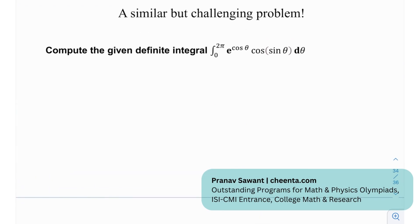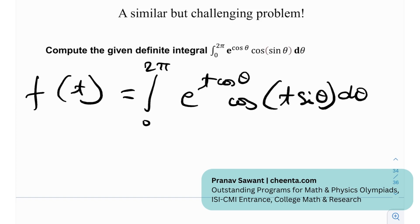Now after that we have a very similar but challenging problem and I want you to compute the value of this definite integral from 0 to 2 pi e to the cos theta cosine of sine theta d theta and I want you to use the Leibniz integral rule. So if you can essentially use the Leibniz integral rule differentiating under the integral sign that would be better. And if I give you a hint, I'll just give you a hint to make life a little bit easier for you. If I can define f of t as 0 to 2 pi of e to the t cosine theta times cosine of t sine theta d theta.